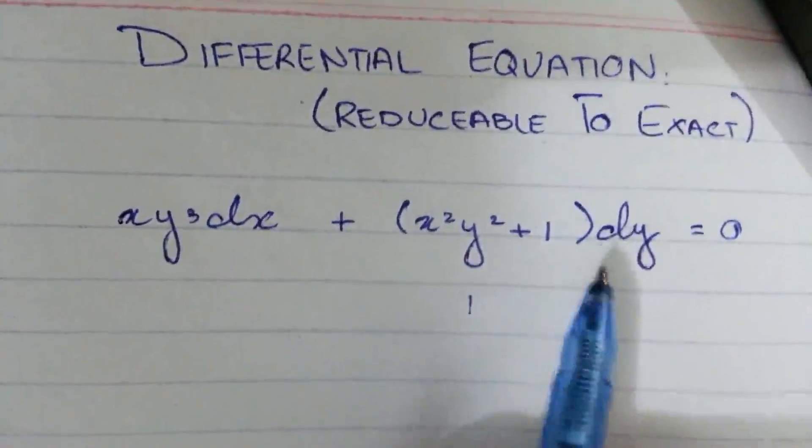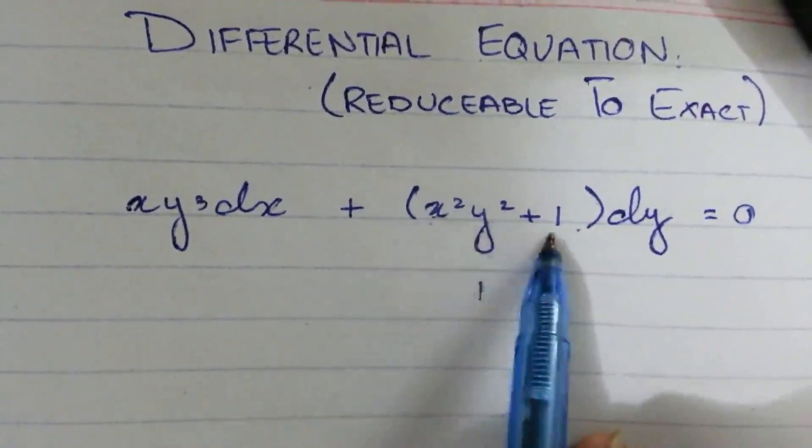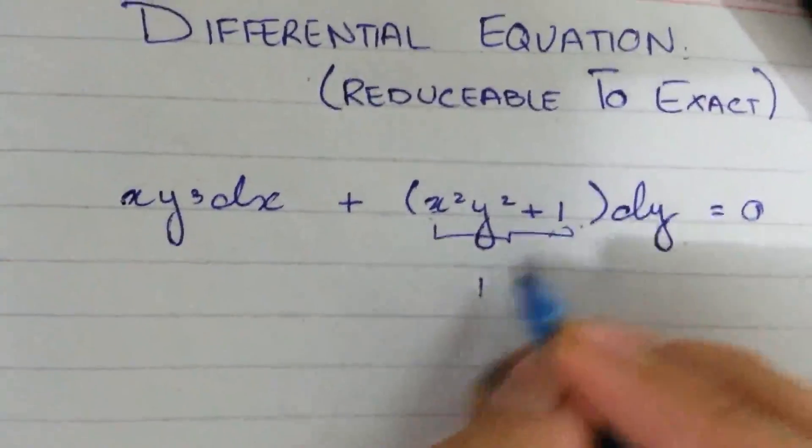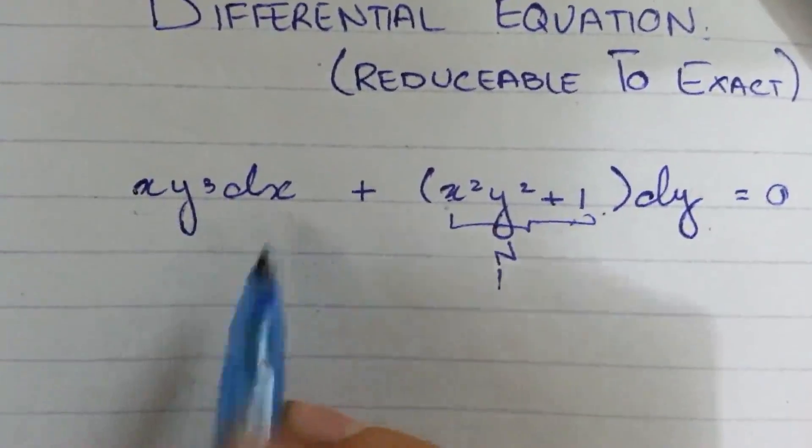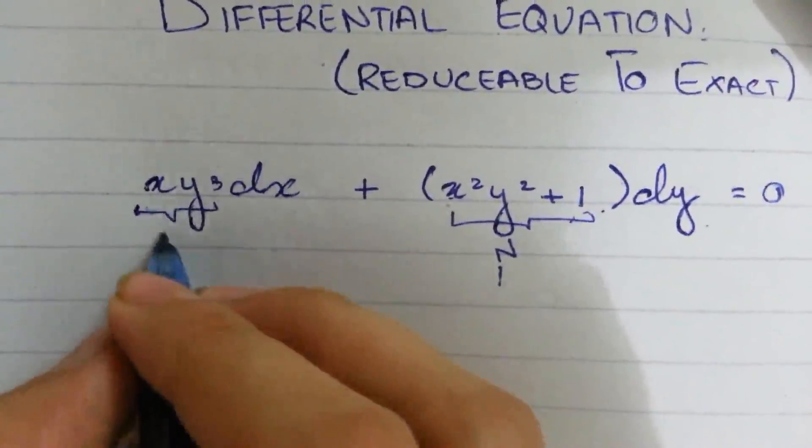Before solving this, remember that all coefficients with dy are denoted as N, whereas all coefficients with dx are denoted as M.